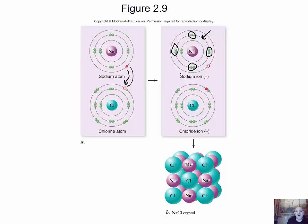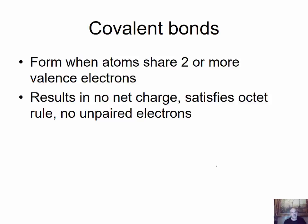The sodium ion now has an octet in the shell beneath — a total of eight electrons. Chlorine, now the chloride ion, has gained the extra electron and also has the magic number eight for its octet. The sodium ion and chloride ion attract each other to form a sodium chloride crystal. Covalent bonds form when atoms share two or more valence electrons. The result is no net charge, and atoms bond until they get an octet by sharing instead of gaining and losing electrons.